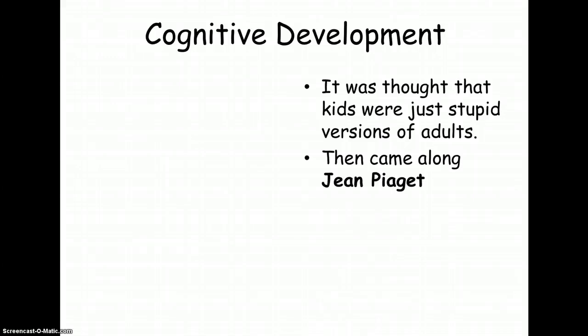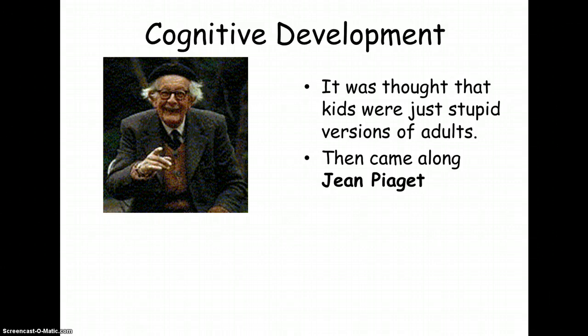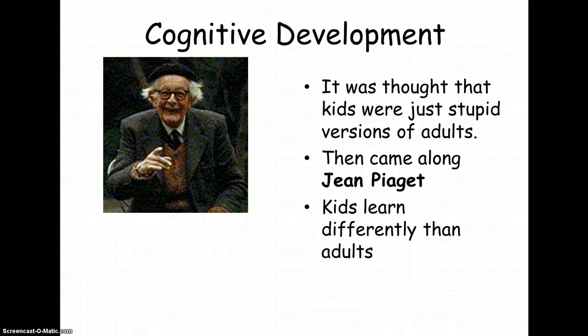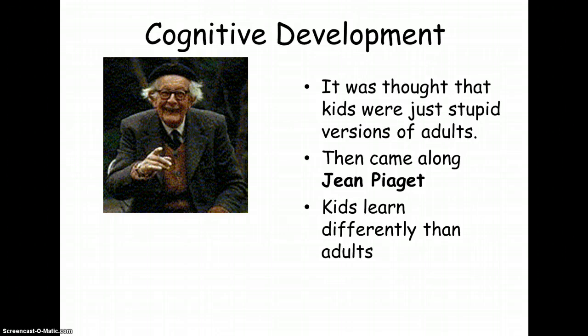Before Piaget, people really just thought that kids were stupid versions of adults — like mini adults. Piaget decided to sit down and observe what children were actually doing. He believed that all children do is important and interesting, and that the errors they make tell us a lot about where that child is and how they're learning. Unlike Freud, whose theories had problems with falsifiability, Piaget designed many tasks and used data, so his theories are falsifiable — and many still hold up today.